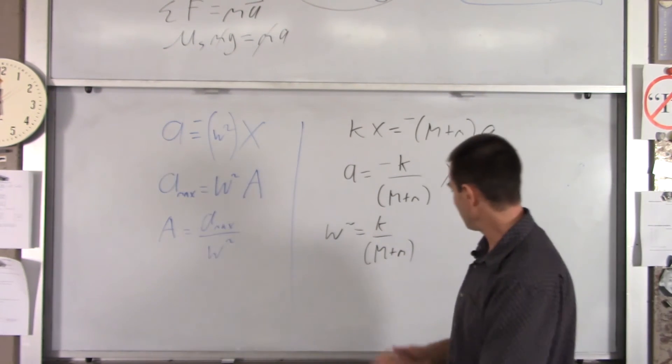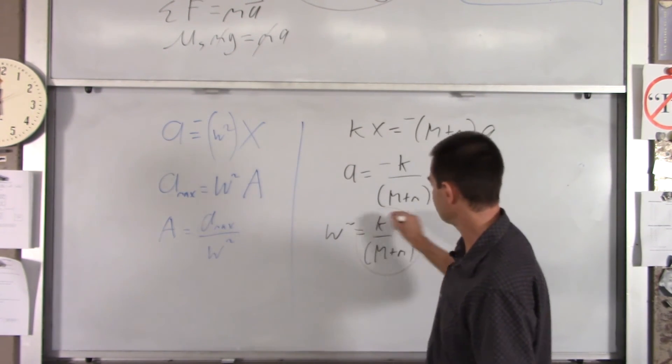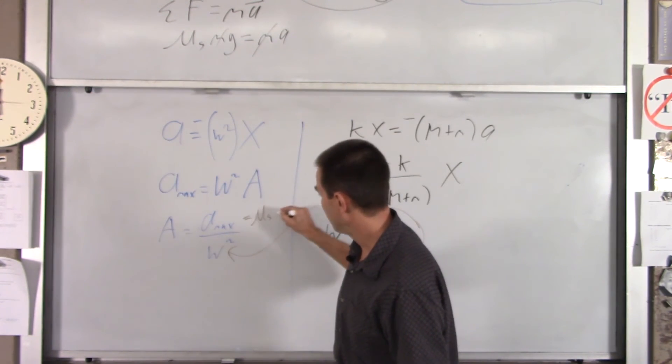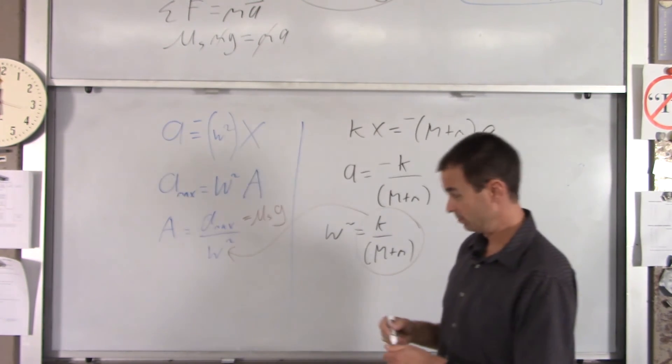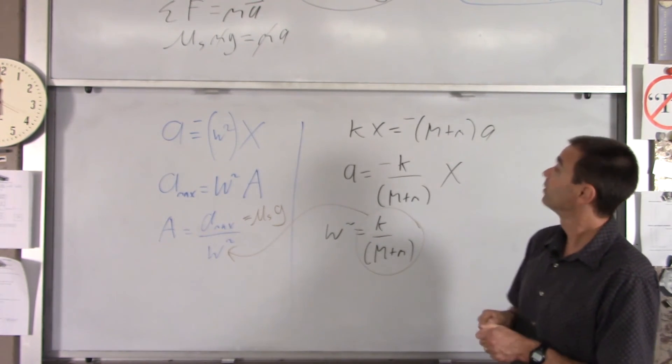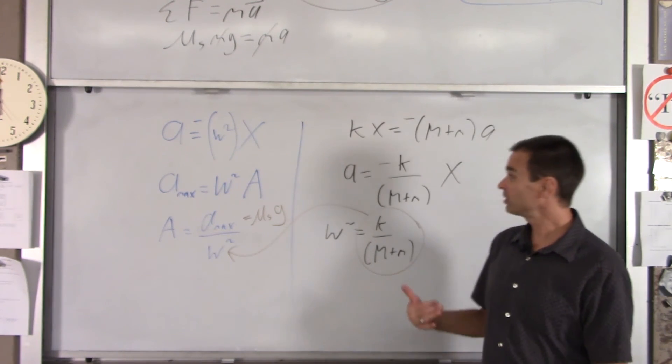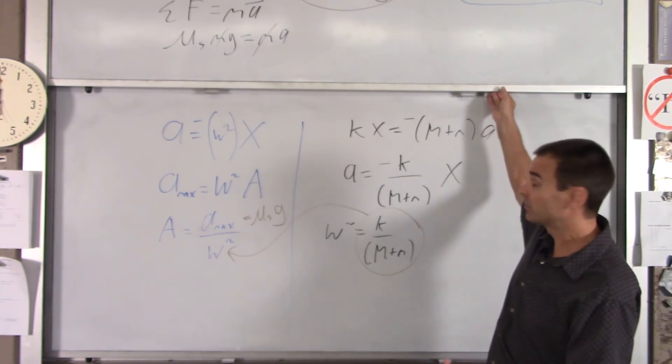If you then take this and plug it in there, and we know a max is mu sub s times g, and you solve for amplitude, you're going to get exactly the same answer we got before. So, basically, we found amplitude doing two different things.